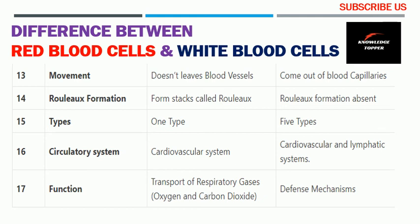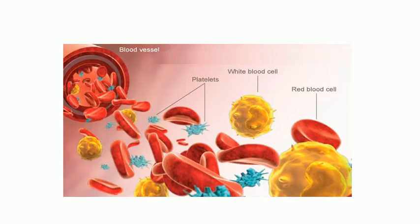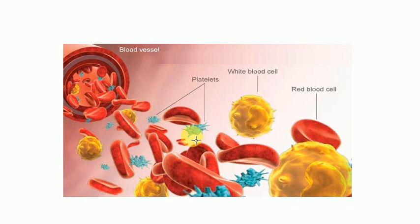Hope you clearly understand the main key differences between red blood cells and white blood cells. Here is an image showing red blood cells, which appear red, alongside white blood cells. The bluish structures visible are platelets, and the surrounding structure is the blood vessel.